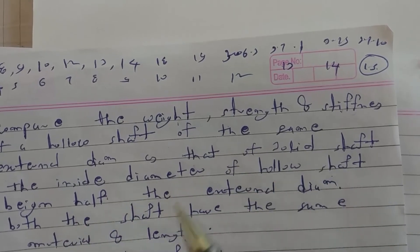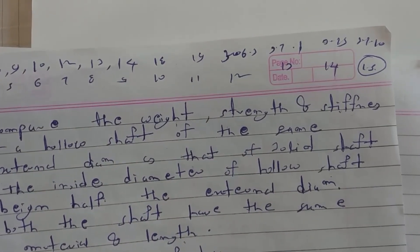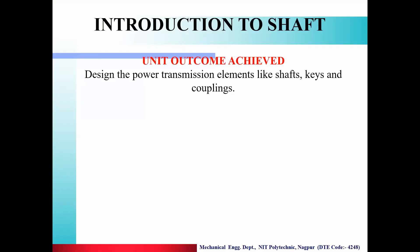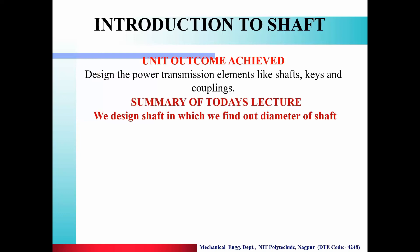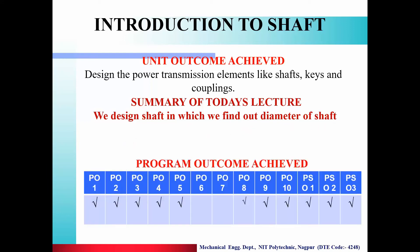In the next lecture we see the next problem on the shaft. The unit outcome achieved in today's lecture: design the power transmission element like shaft, key, and coupling. Summary: we designed the shaft and found the diameter. Program outcomes achieved: PO1 to PO5, PO8, PO9, PO10. Program specific outcomes: PSO1, PSO2, PSO3.